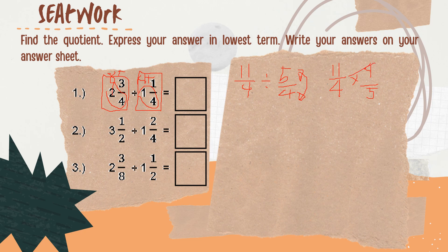We can cancel out 4 and 4 — they both become 1. 11 times 1 is 11. 1 times 5 is 5. Don't forget to reduce the answer to lowest terms. How many 5s are there in 11? We have 2. 2 times 5 is 10. 11 minus 10 is 1 over 5. So the answer for number 1 is 2 and 1 fifth.